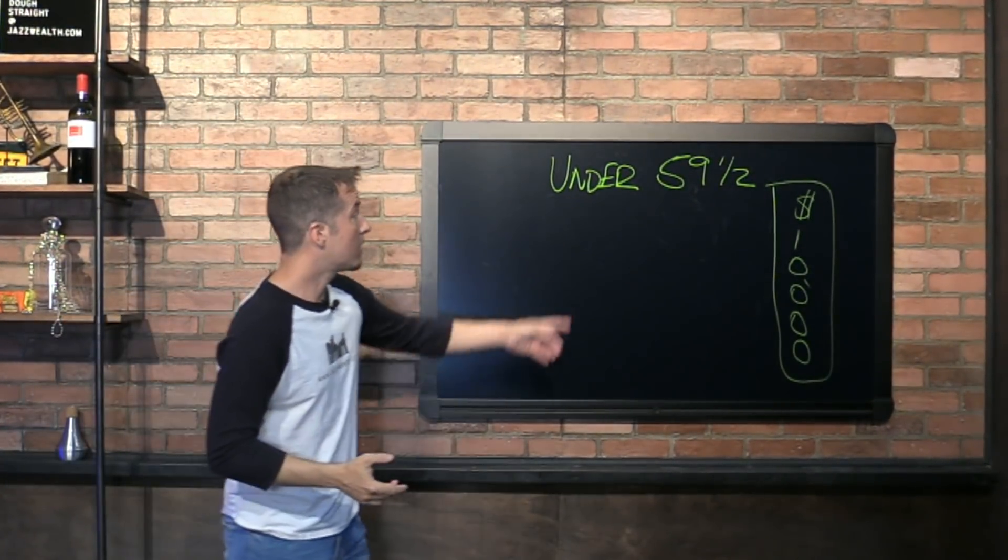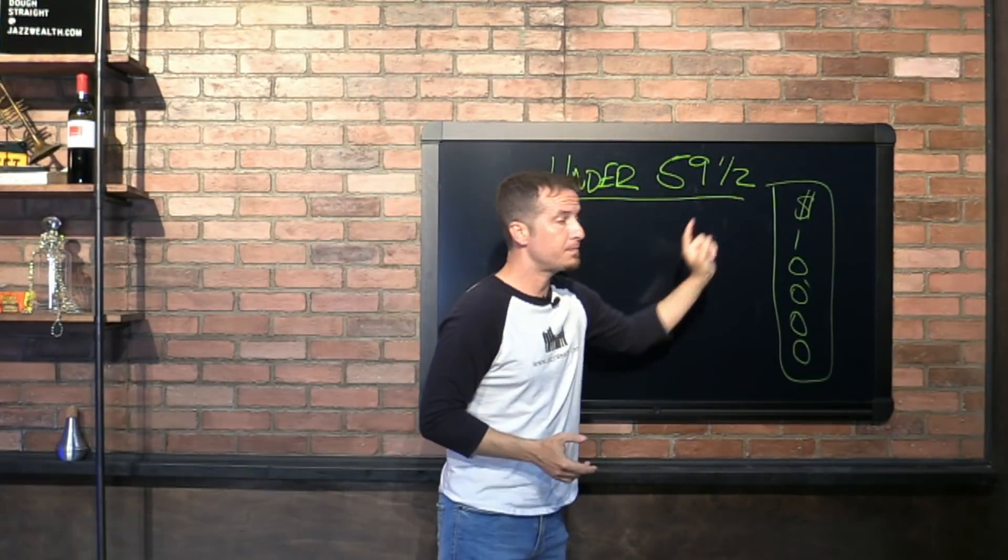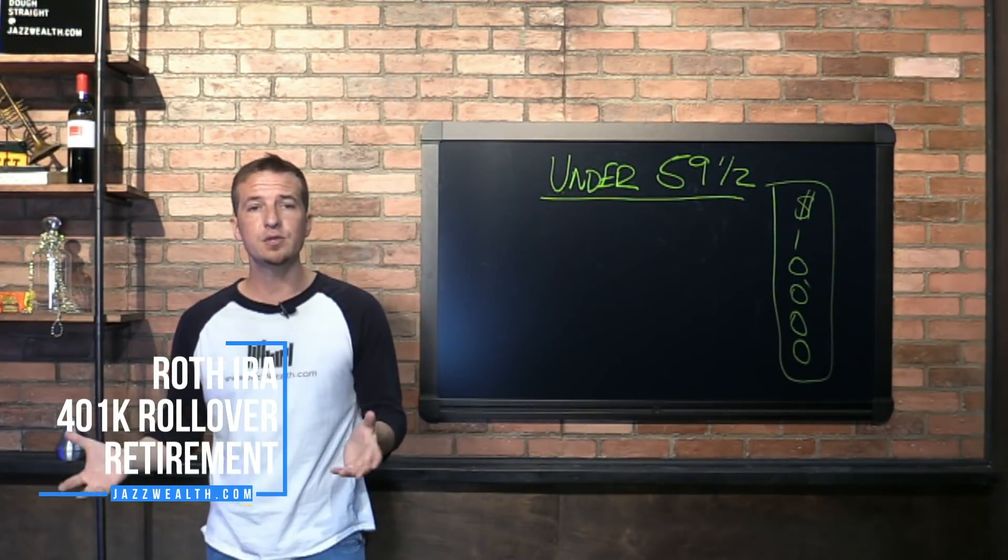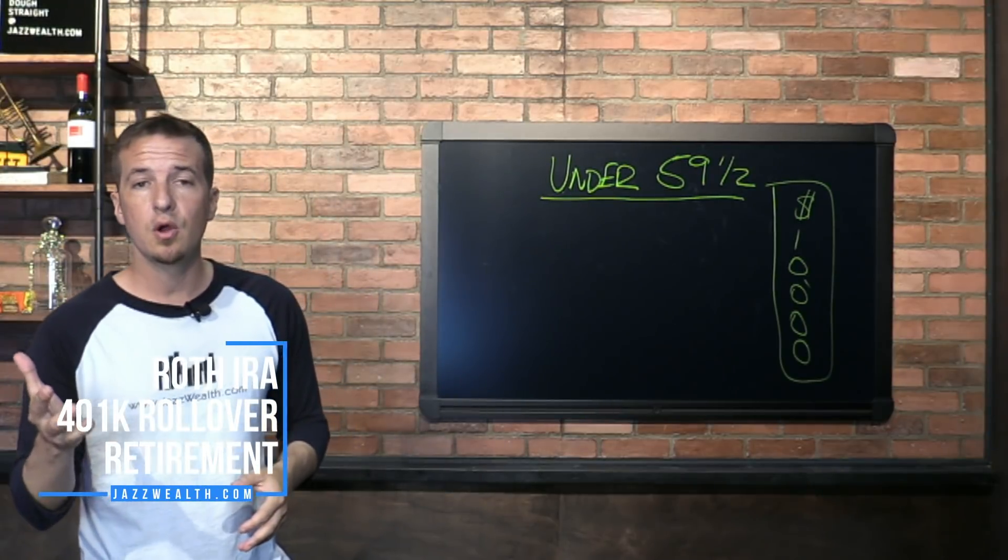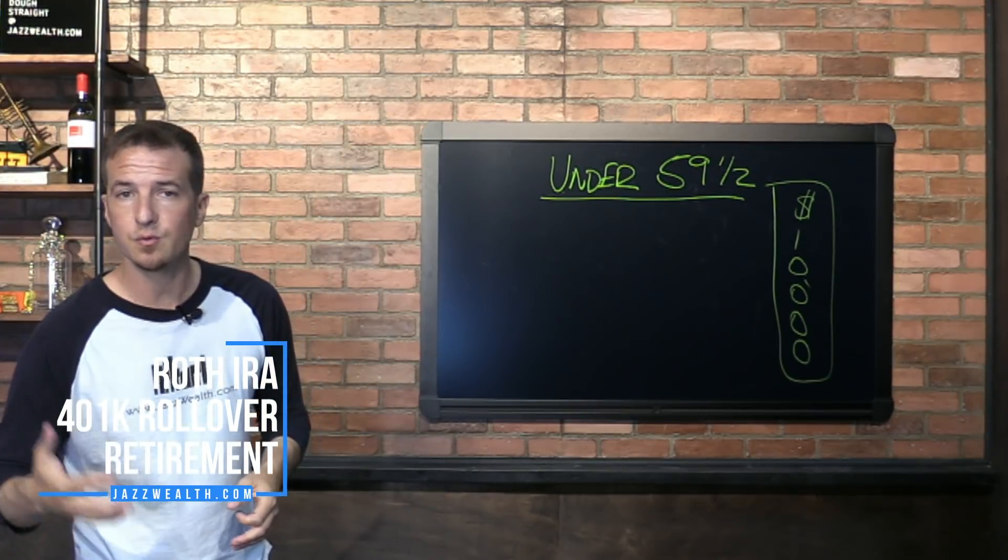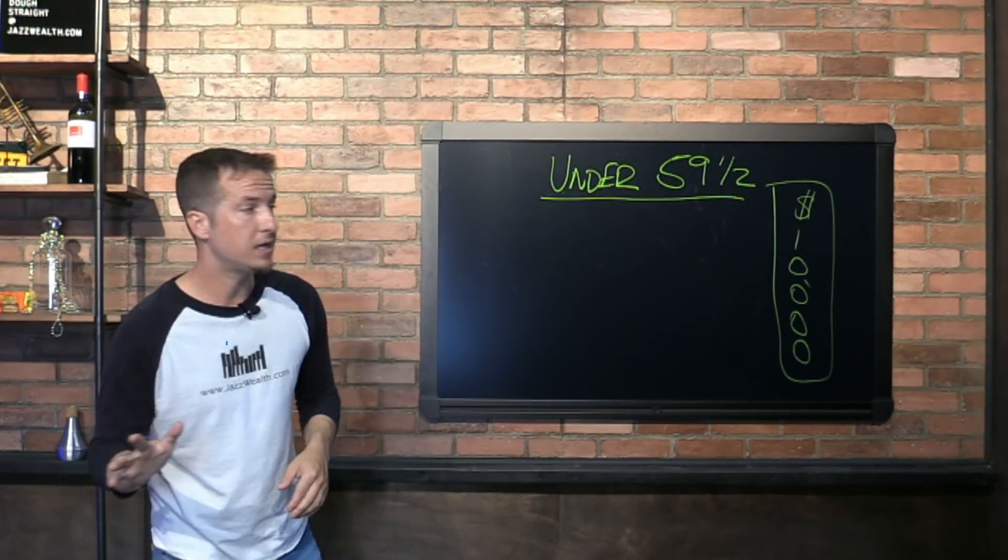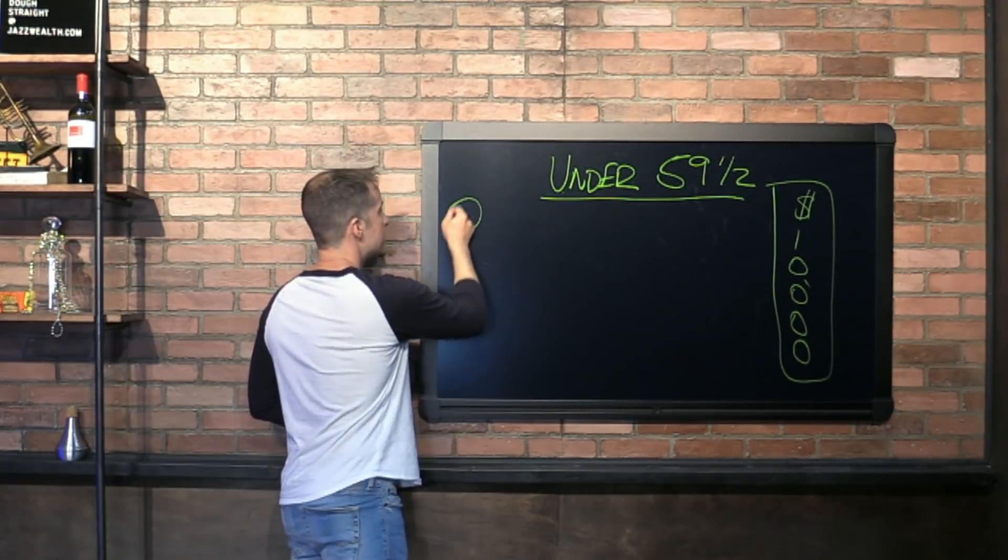All right. So let's get started here. Look, the goal is we're under the age of 59 and a half. These are the assumptions I'm using today. We want to take out the $10,000. That's the max you can take out, by the way, to go buy a house, build a house, rebuild a house, whatever it may be. So here's four things I want you to keep in mind. Number one, you got to be a first time home buyer.